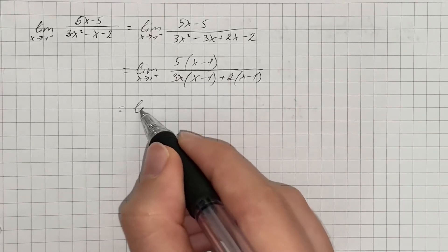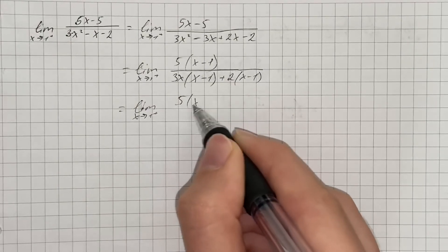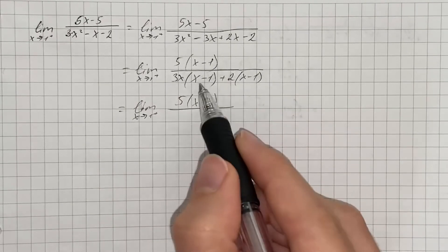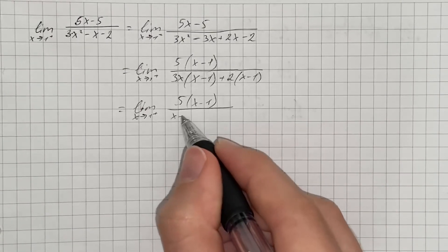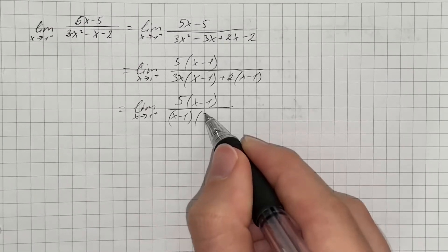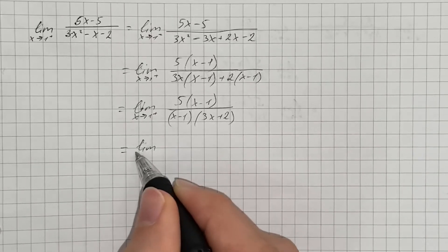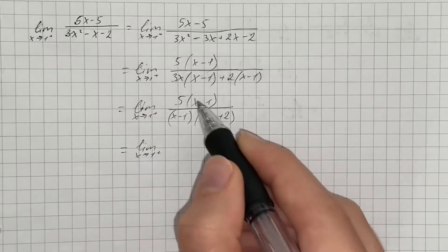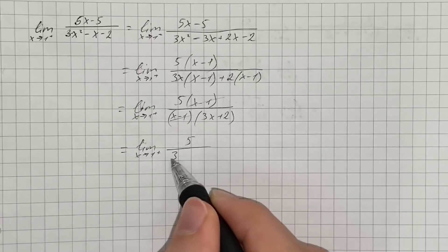So it's going to be limit as x approaches 1 plus 5 times x minus 1 over, and in the denominator, we factor out x minus 1 and multiply by 3x plus 2. So now we can cancel out x minus 1 and we get 5 over 3x plus 2.